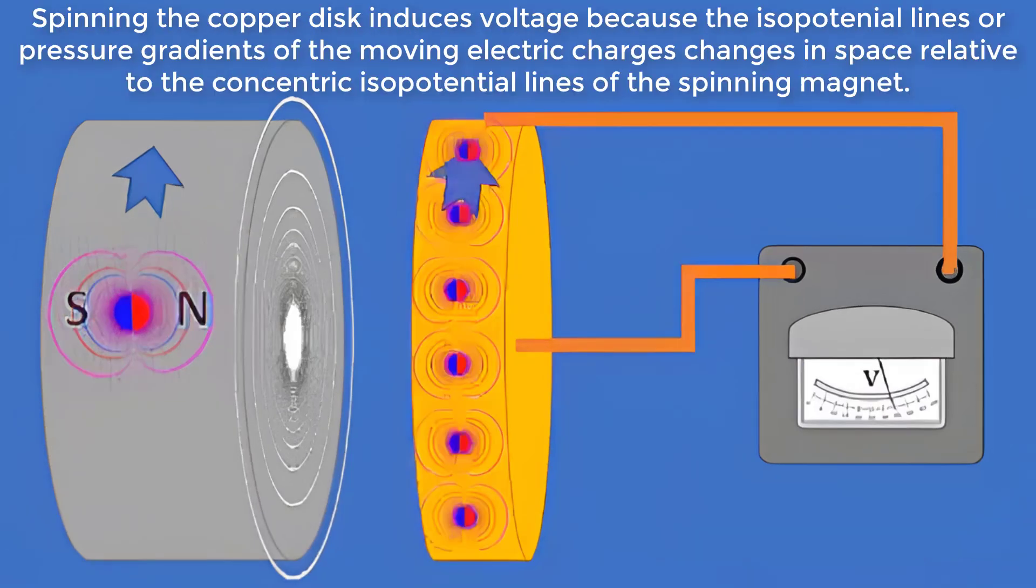Spinning the copper disk induces voltage because the isopotential lines or pressure gradients of the moving electric charges changes in space relative to the concentric isopotential lines of the spinning magnet.